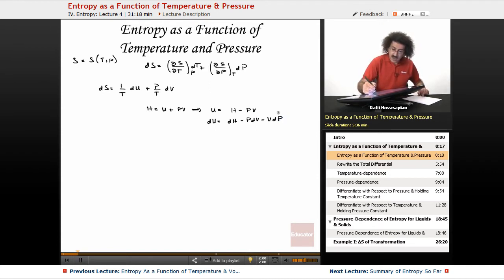Now I'm going to substitute this expression for du into the fundamental equation. I'm going to end up with ds equals (1/T) times (dh minus P dv minus V dp) plus (P/T) dv.